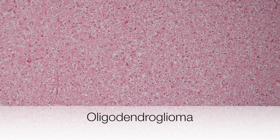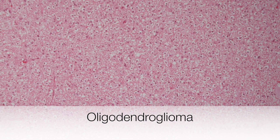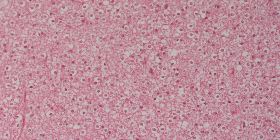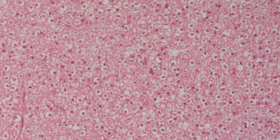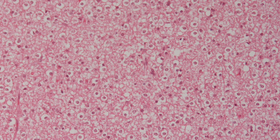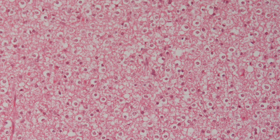Here is the typical histological appearance of a grade 2 oligodendroglioma. It is composed of sheets of regular cells, and even on low power the perinuclear halos can be seen, producing a fried egg type of appearance. On higher magnification, the typical fried egg appearance of the cells in the oligodendroglioma can be appreciated.